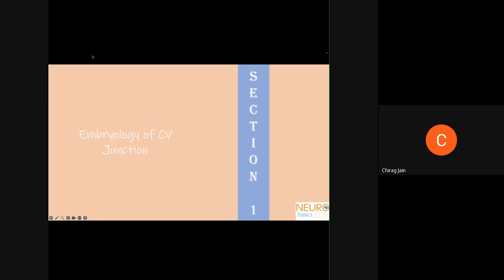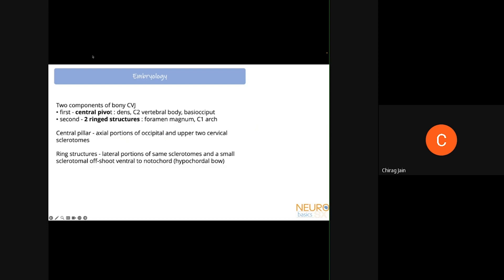Coming to the embryology of the cranial vertebral junction — this is a slightly complicated topic and you can easily get lost in it. There are basically two components of the bony CV junction: a central pivot in the center made up of the dens, the C2 vertebral body, and the basi-occiput; and two ring structures surrounding it, which include the foramen magnum and the C1 arch. The central pillar is made up of the axial portions of occipital and upper two cervical sclerotomes.